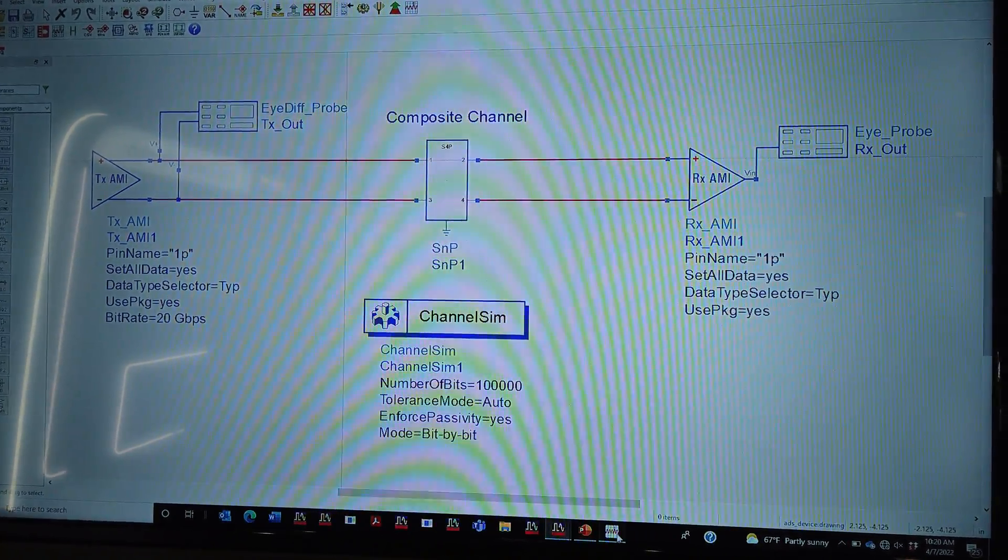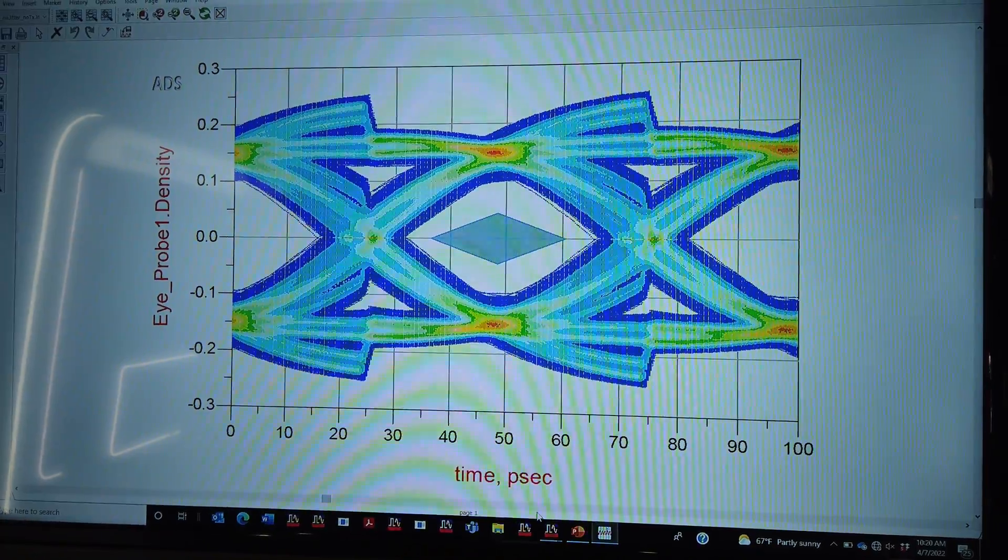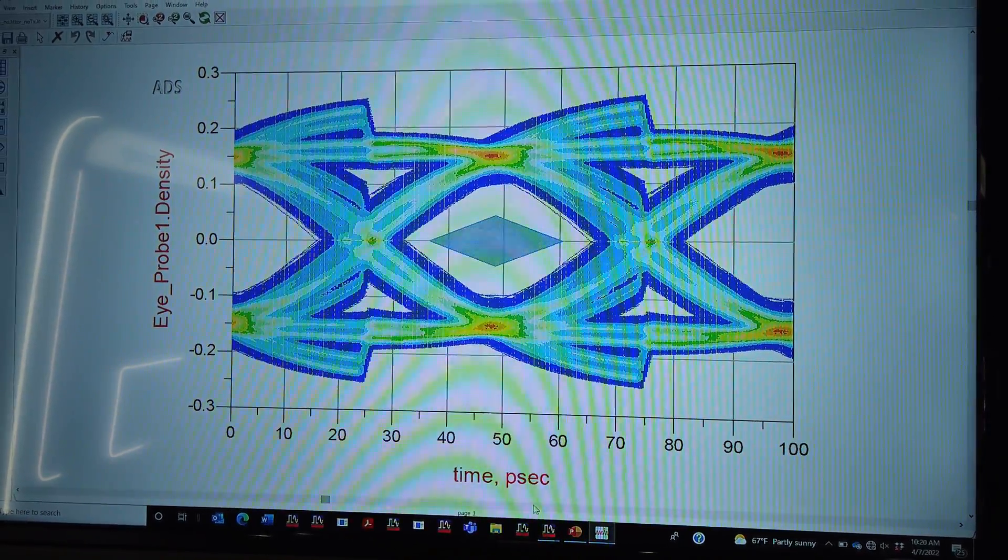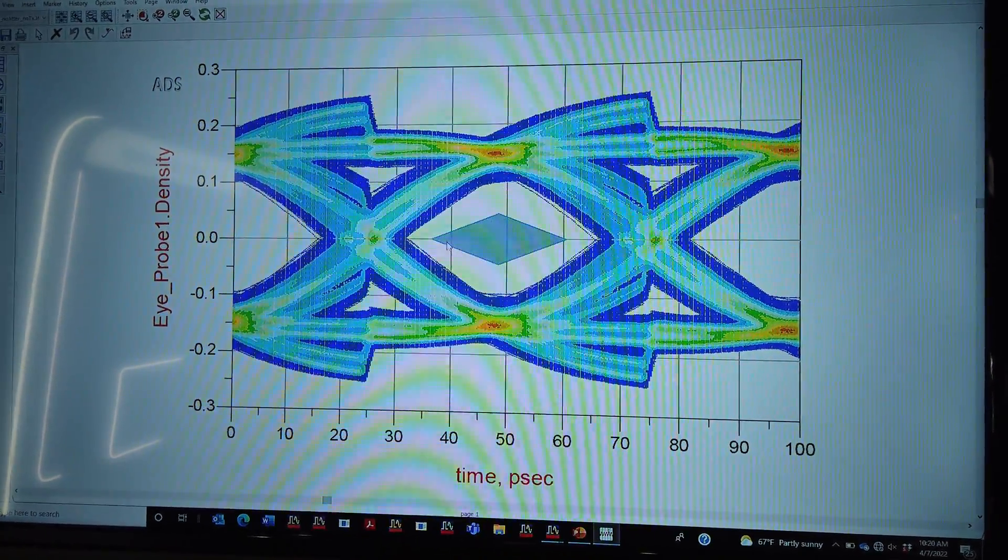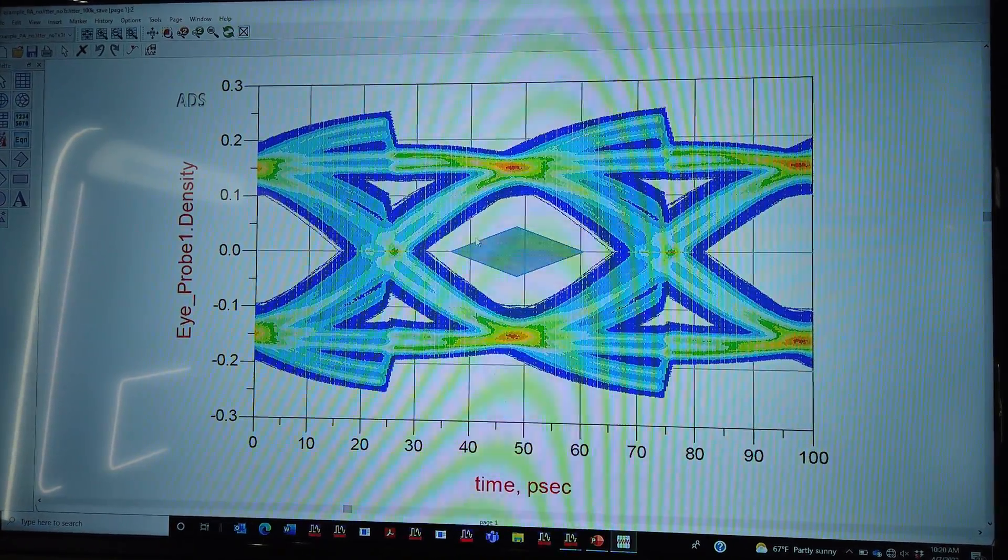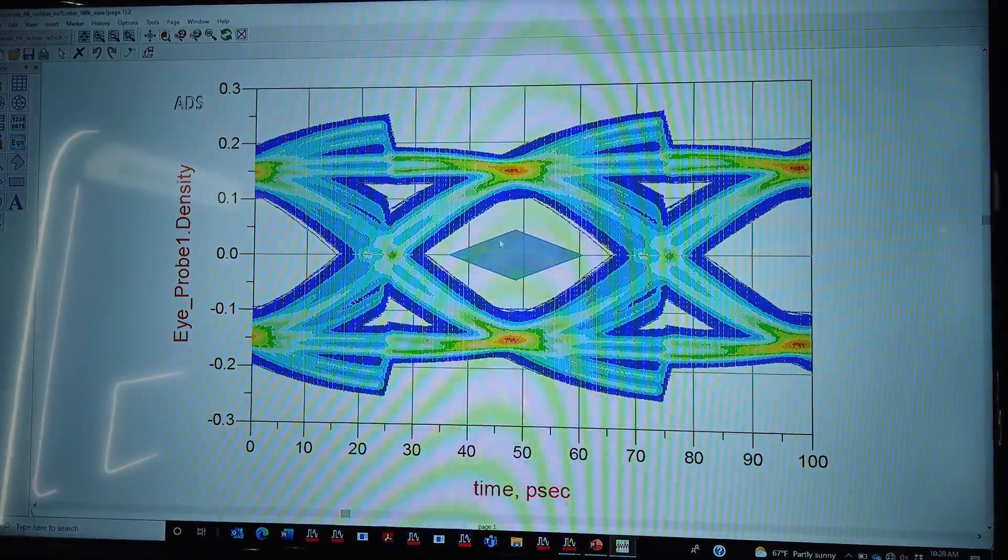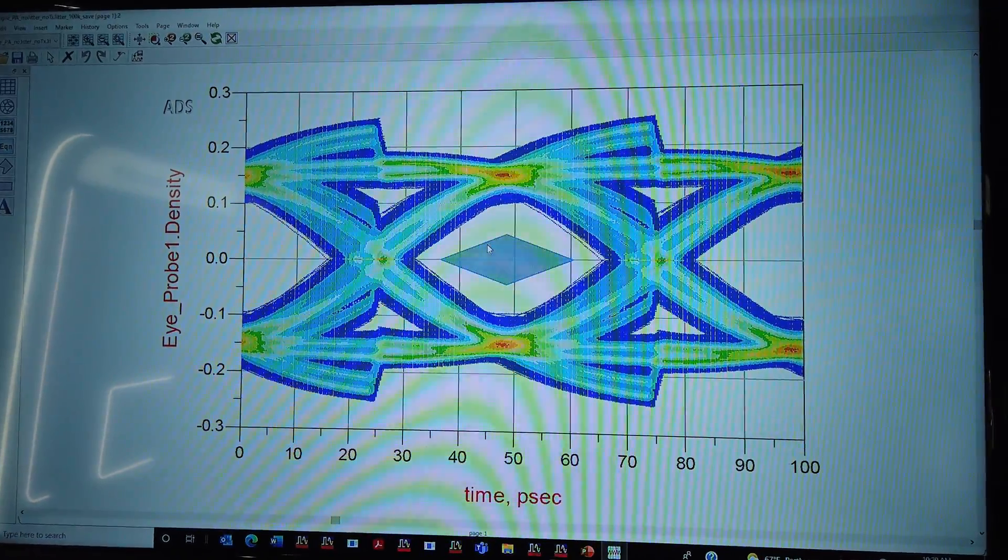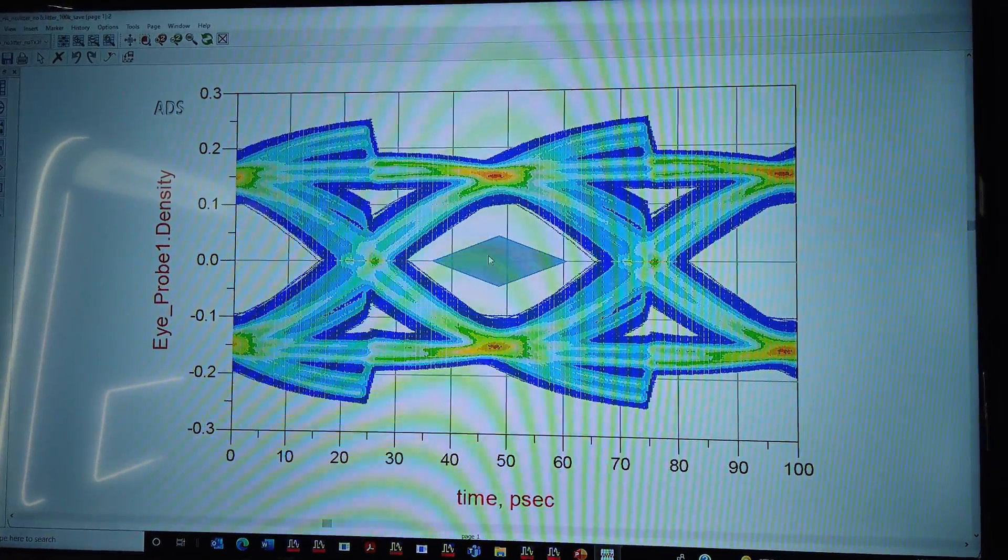After we complete the simulation, what we're getting is an eye that clearly matches the spec. I've superimposed the USB 4 Gen 3 test case 3 mask on here. It's very clear that the eye is passing with flying colors, and we're seeing what we're expecting.